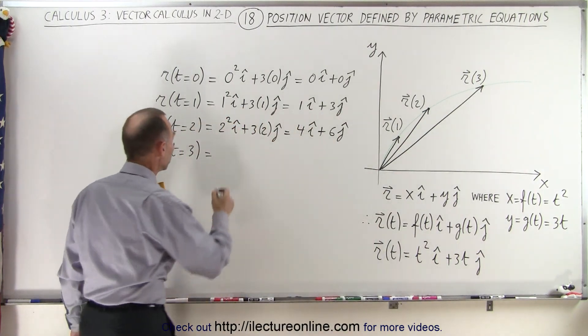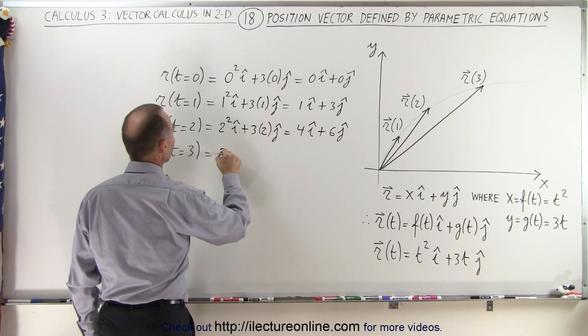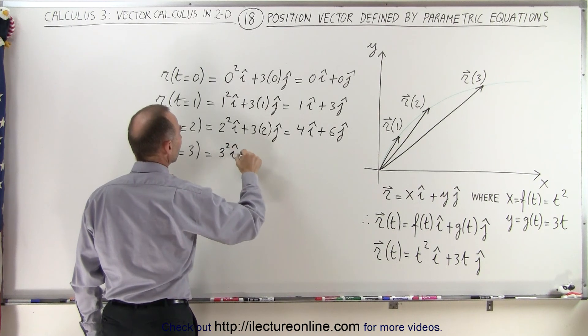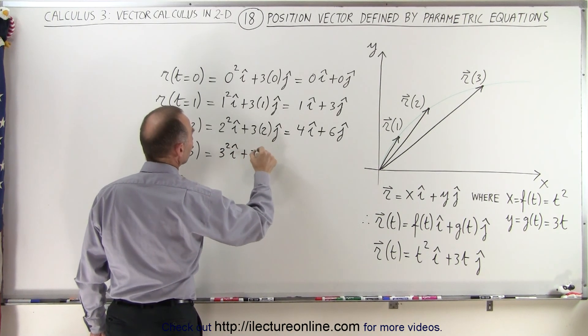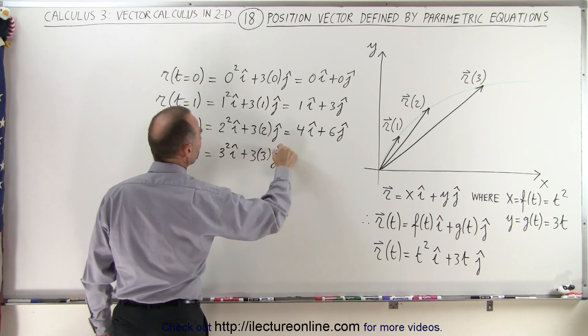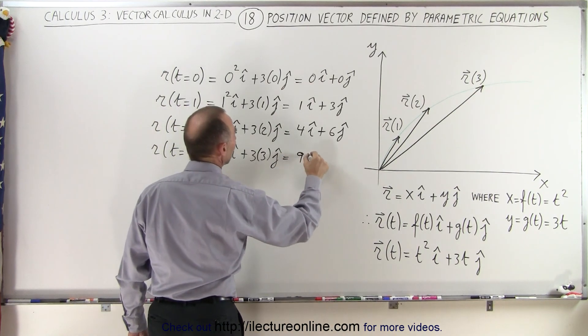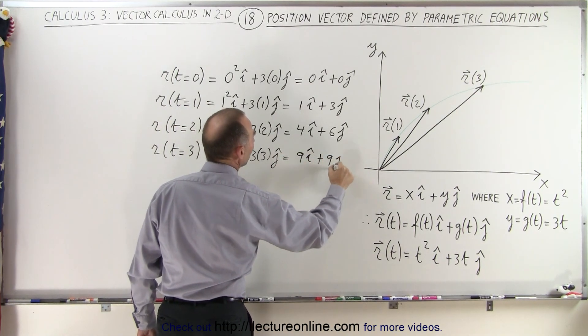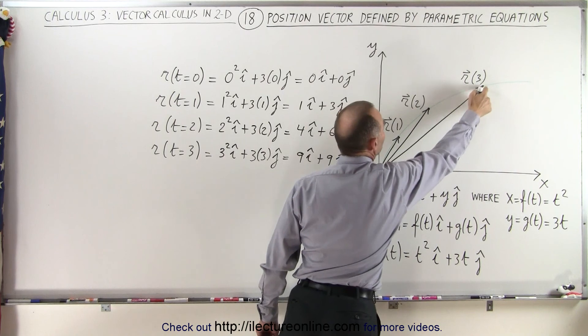And one second later, we can say that this will be 3 squared in the i position, or in the i direction, 3 times 3 in the j direction, which is equal to 9i plus 9j. And you can see now our particle is over there.